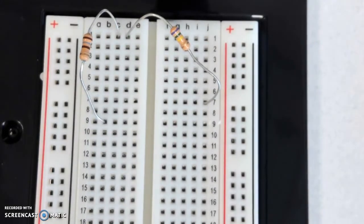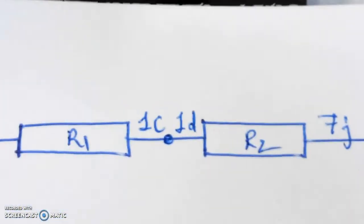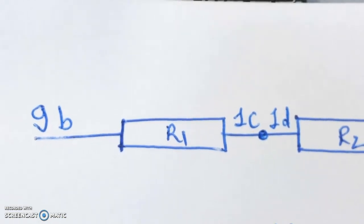So what you see is I have two resistors. So I have basically two resistors, and the first resistor, one side is connected to nine B. Nine B, the other end of the resistor is connected to one C. The other side of the resistor is connected to one D, and finally the next one is connected to seven J.